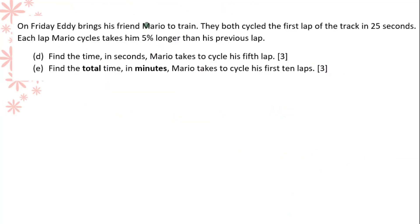On Friday, Eddie brings his friend Mario to train. They both cycled the first lap of the track in 25 seconds. Each lap Mario cycles takes him 5% longer than his previous lap. Find the time in seconds Mario takes to cycle his fifth lap. 5% longer than his previous lap means 1 plus 5% times his previous lap. This equals 1.05.